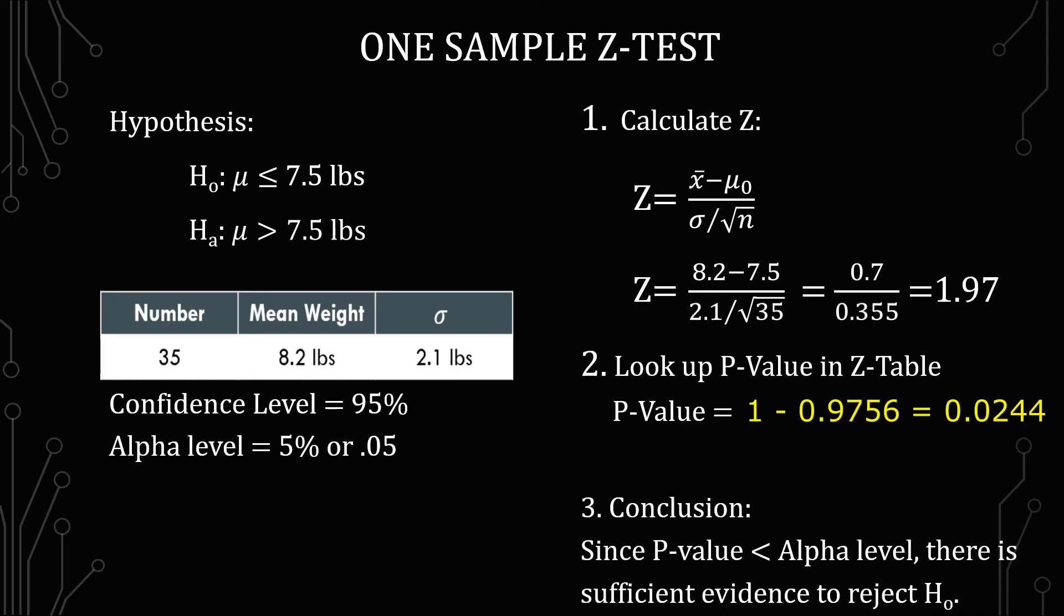Remember, we don't accept hypotheses. You always reject or fail to reject in regards to the null hypothesis. The alternative is really there to help you understand which type of test it is, if it's a one-tailed or two-tailed test, and whether you're looking at the left or right side of the value.